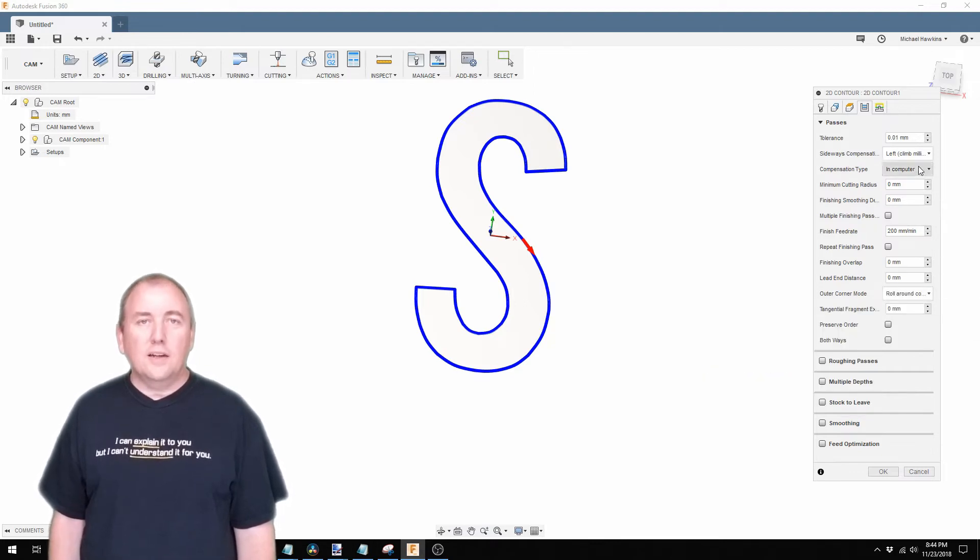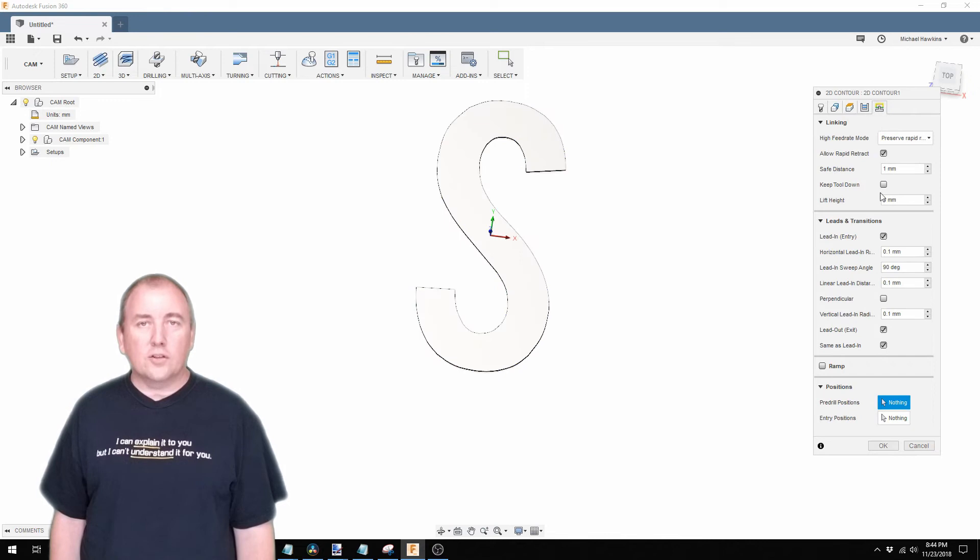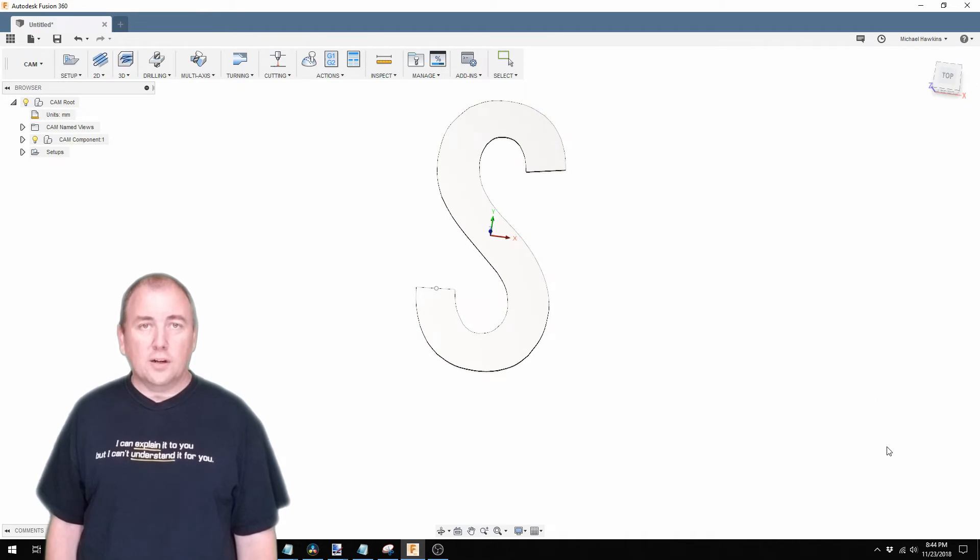On the linking tab I set an entry position to start on a straight edge of the letter so that I knew exactly which direction the drag knife would need to point at the beginning of each cut as I would need to manually point the blade in the correct direction at the beginning of each cut. For each letter that we needed I did the same steps to model the letter and to create the 2D contour path to generate the g-code.